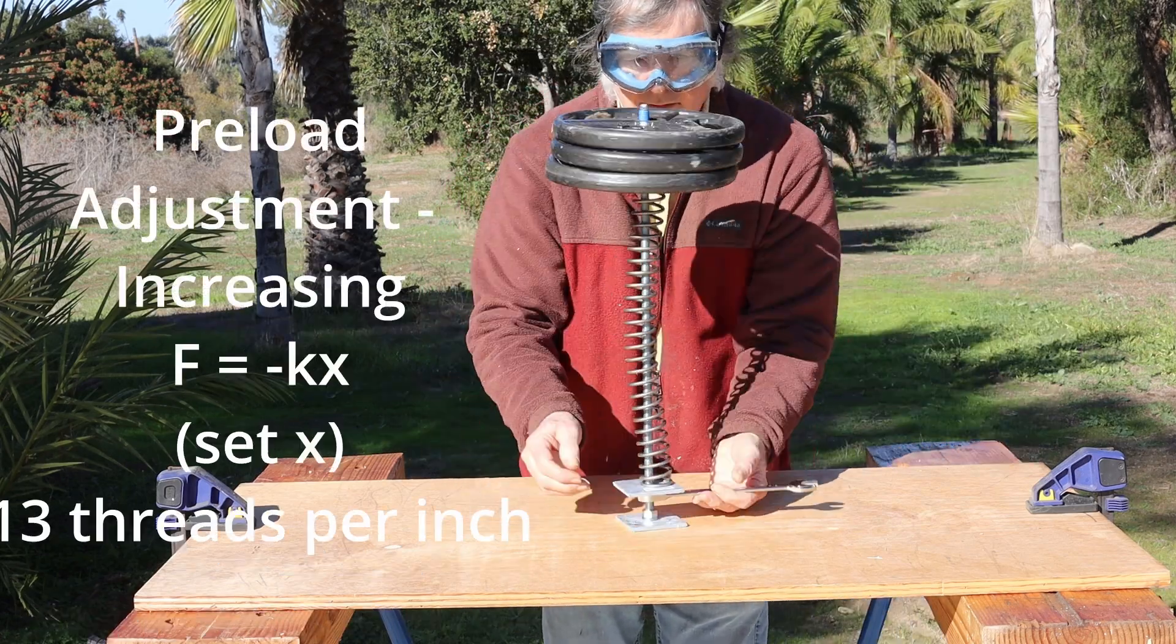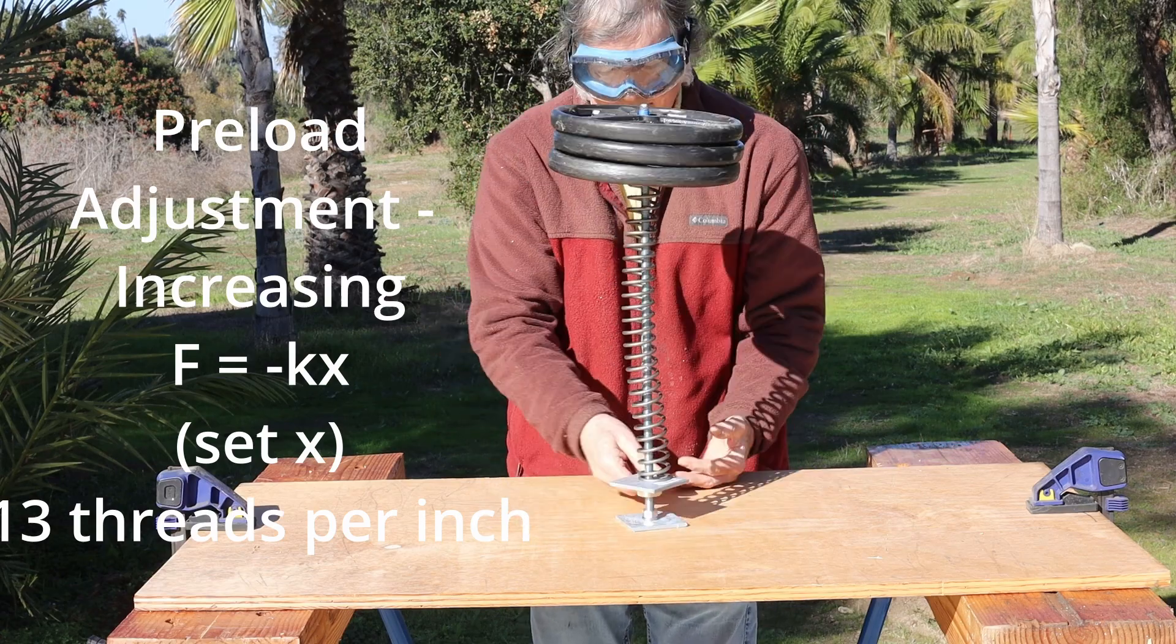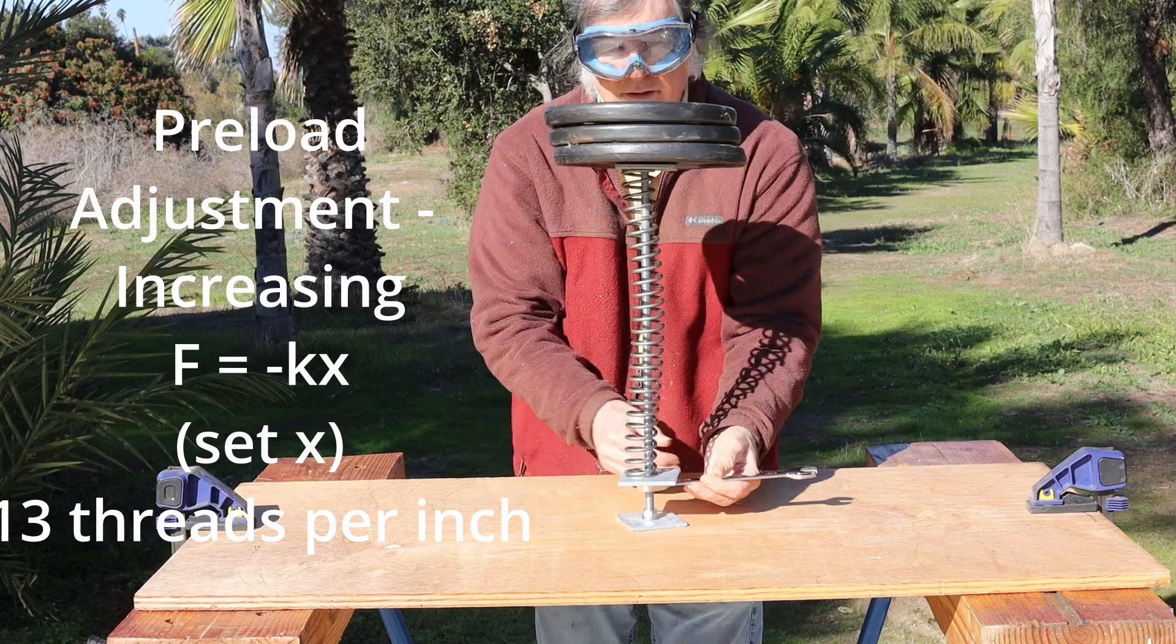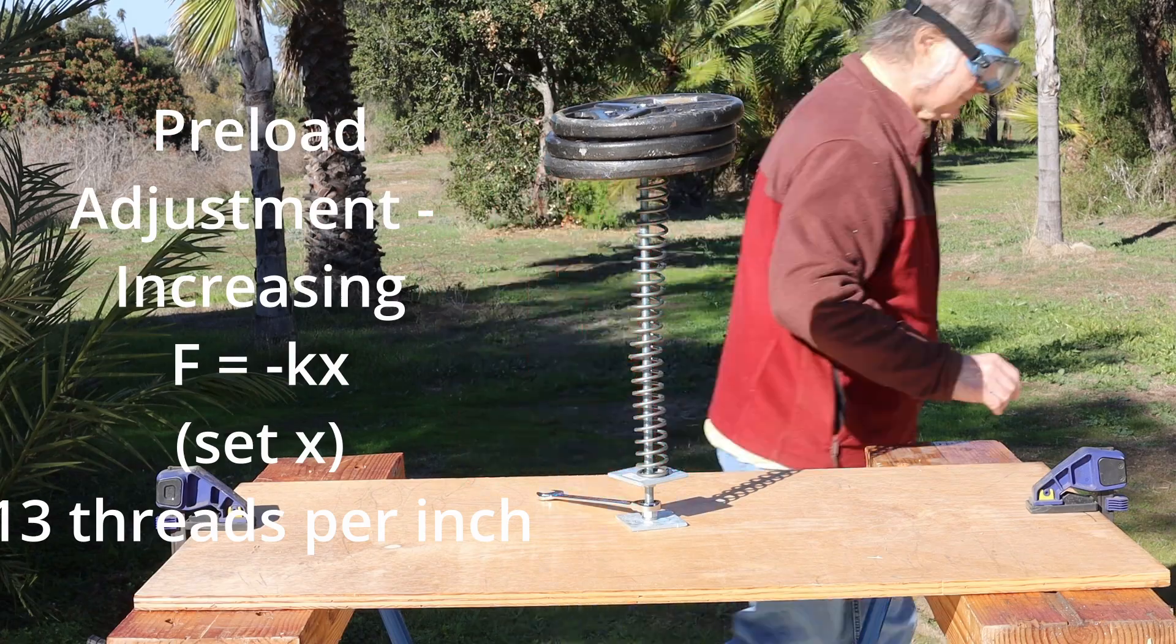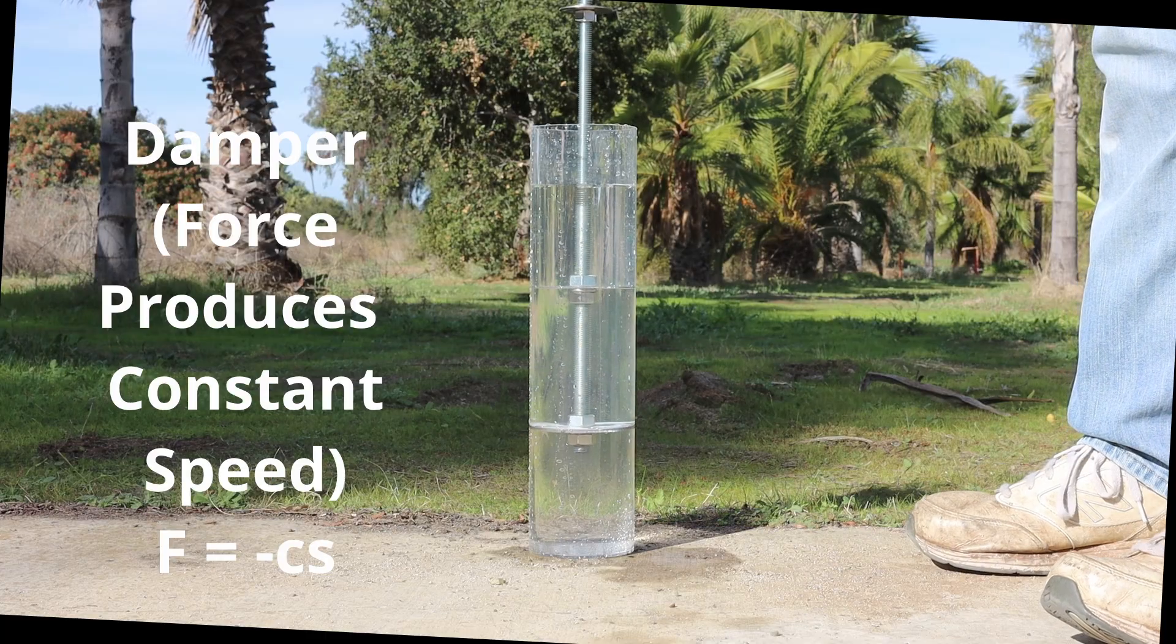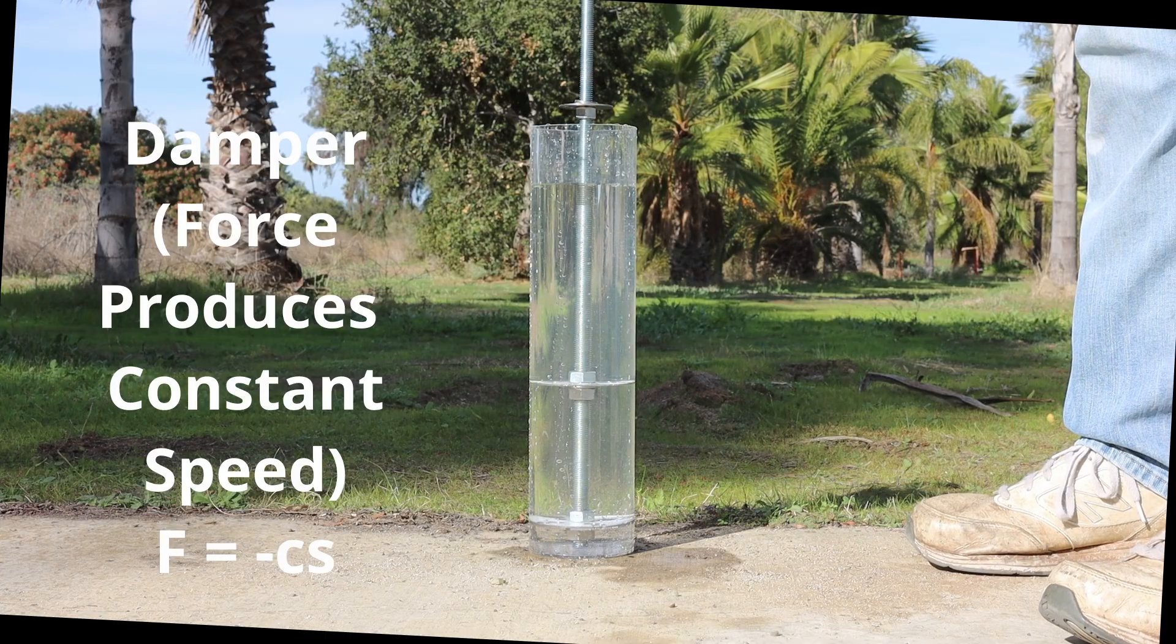A preview of upcoming material. The spring constant k describes the relationship between force and distance. The damping constant c describes the relationship between force and speed.